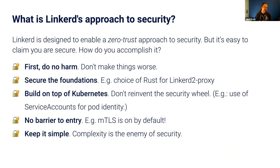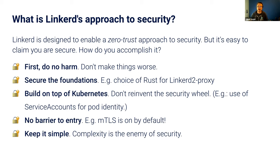We add security by supporting mTLS in the proxy — mutual identity where every proxy generates its own private keys. Those private keys never leave the pod. We automatically secure everything we can, and we don't break anything that we can't secure. This is important because a lot of the Kubernetes core traffic like health checks and readiness probes can't be secured by default today. So we take an incremental approach. Our proxy is written in Rust, which is a memory-safe native language, and it's all built on Kubernetes.